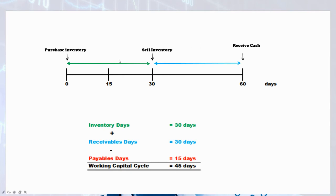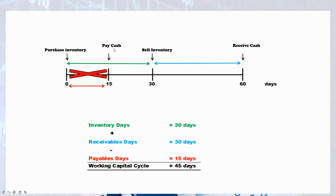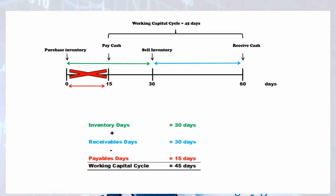The last thing to determine is when the company actually pays cash for its inventory — and it's not on day zero. Because of payable days, the company purchases inventory on credit, so it takes an average of 15 days after purchasing to pay the cash back to its suppliers. So the working capital cycle — the period between when the company pays cash and when it receives cash — is 45 days. That's the cash conversion cycle, and that's the sharing for today. See you next time, bye bye.